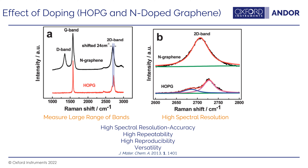You can also see that the line shapes are different between the two samples. The 2D band in graphene has only one component, while several components make up the 2D band in HOPG, because HOPG is constructed in multiple layers and graphene is a single layer. In order to do this, you need high spectral resolution, high accuracy, high repeatability, and the flexibility to quickly switch between a large band pass measurement and one with higher spectral resolution.